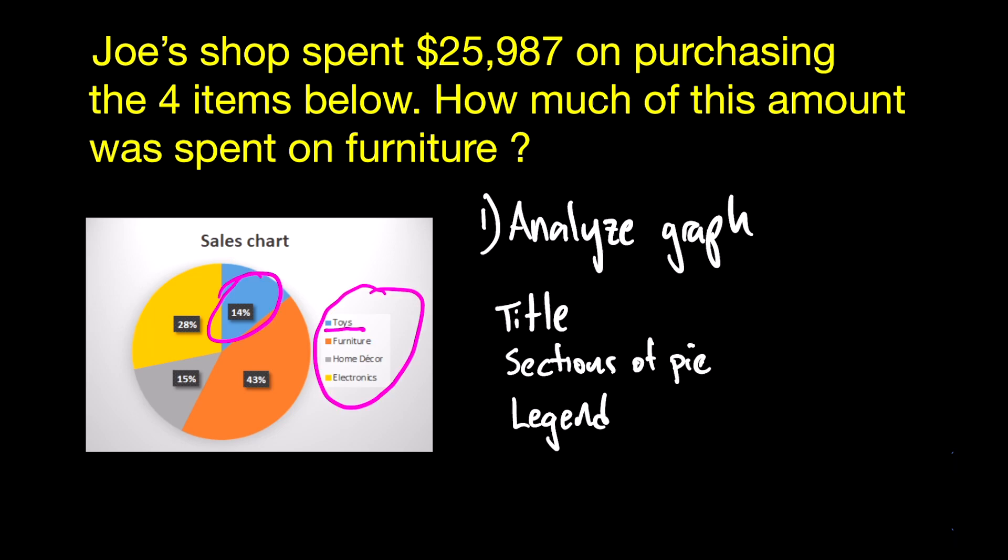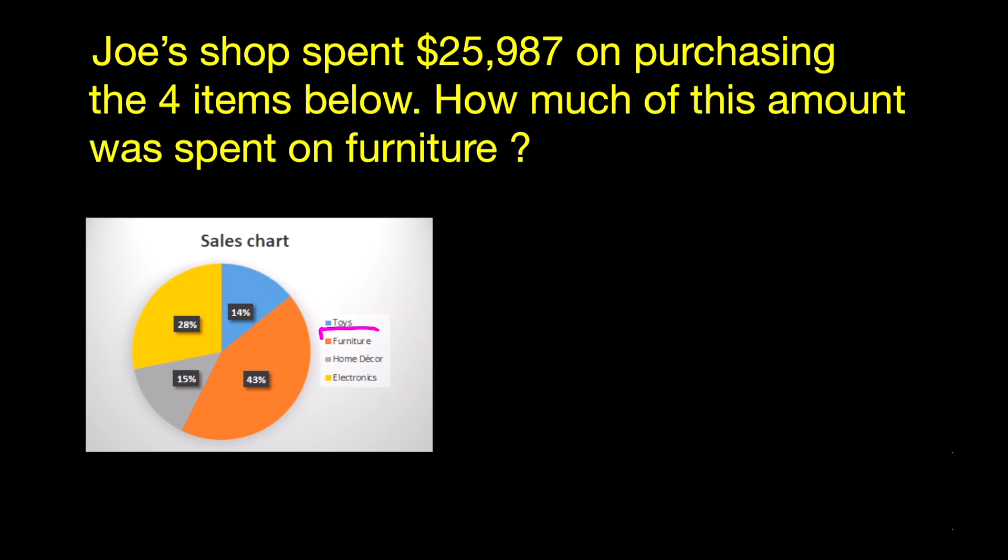If you look at the blue segment, it represents toys, which is 14%. In the question, they're asking us how much of all these purchases were spent on furniture. You can see that furniture is in orange on the legend and represents 43% of the total sales.